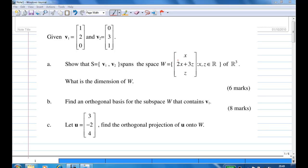W consists of vector x, 2x plus 3z, and z, for x and z real numbers. We also ask the dimension of the space W.